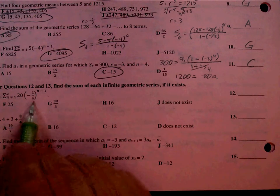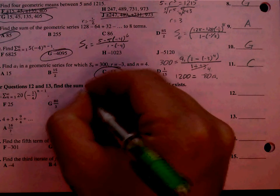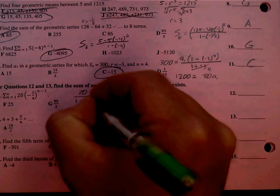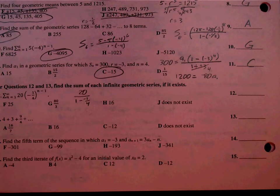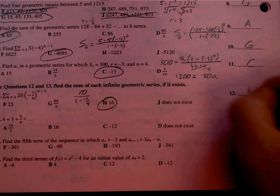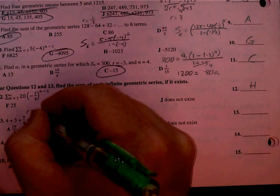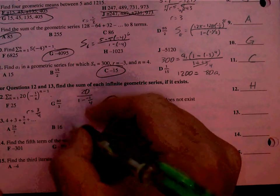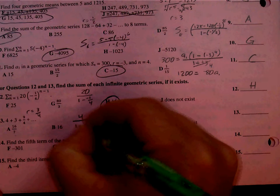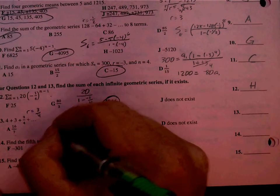Number 12. Our R is negative 1 fourth. That's less than 1, so that's okay. So we would find our first term, which is 20 over 1 minus R. So we're taking 20 divided by 1 plus 1 fourth. We get 16H. Number 13 looks like we're multiplying by 3 fourths. That's less than 1. So we would go ahead and take our first term over 1 minus 3 fourths, which gives us 16B.